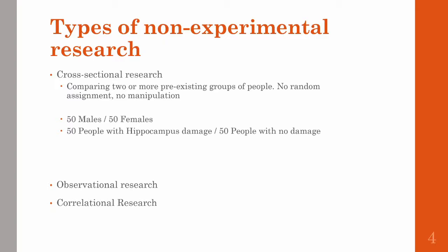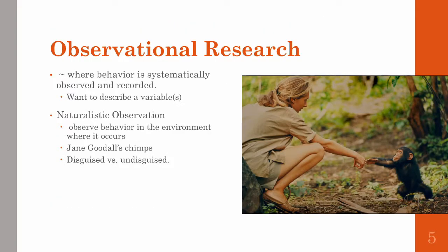The other two types are observational research and correlational research, and we'll go a little more in-depth about those two. Observational research is where behaviors are systematically observed and recorded. The goal is to describe a variable or a set of variables as they naturally occur.